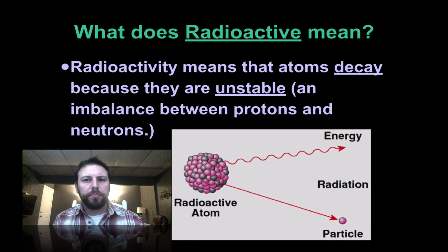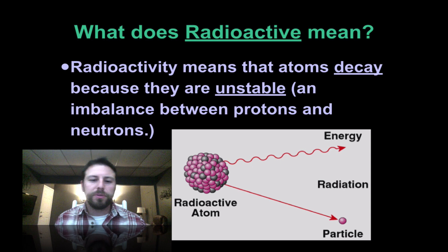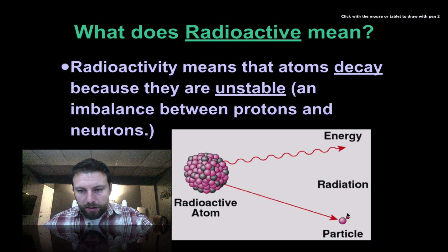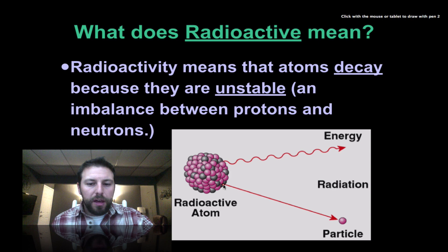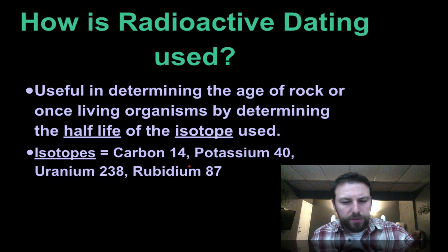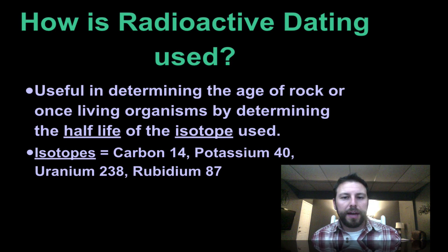When something is radioactive, it means that the atoms themselves are going to basically break down or decay over time because they were unstable. There's an imbalance between the protons and neutrons that make up that atom. You can see here on this diagram we have a radioactive atom, a particle is coming off, and we also give off energy. When these atoms break down, they usually break down to something a little bit more stable.